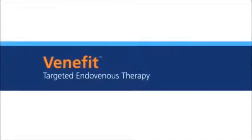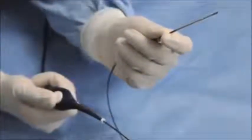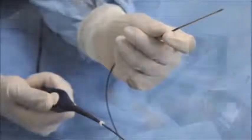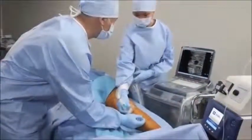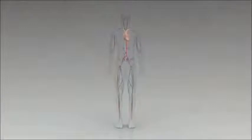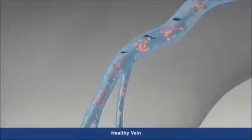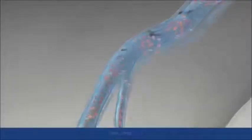Benefit targeted endovenous therapy delivered by the Covidien closure fast radio frequency catheter is a minimally invasive treatment for chronic venous insufficiency or CVI that can be performed in a clinic or hospital setting. CVI is a progressive medical condition where the valves that carry blood to the heart and the calf muscle no longer function effectively, causing blood to accumulate in the legs and the veins to swell.